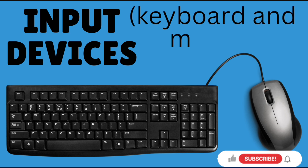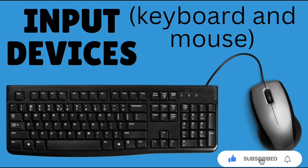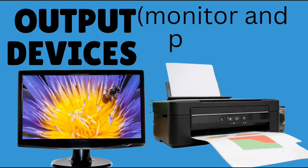Input devices — keyboard, mouse. These are how we tell the computer what to do. Output devices — monitor, printer. This is how the computer shows us what it's done.